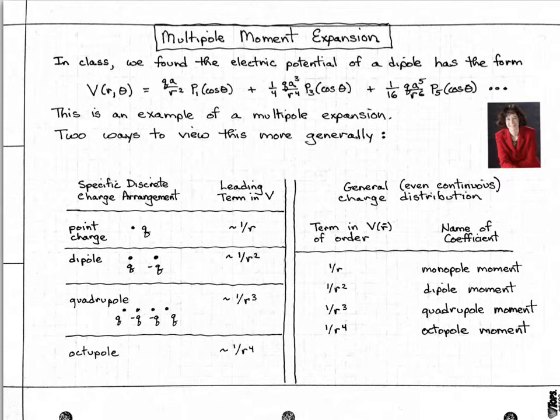What's really interesting though is that this is an example of something more general called a multipole expansion of a potential. What I wanted to point out is that there are two different ways to view this in a physical sense. The first is if we're talking about a specific arrangement of discrete point charges.